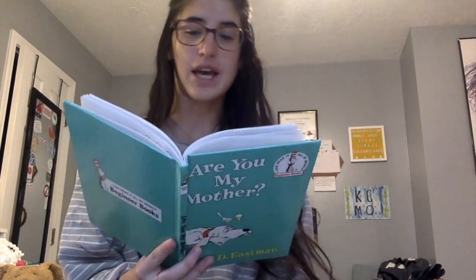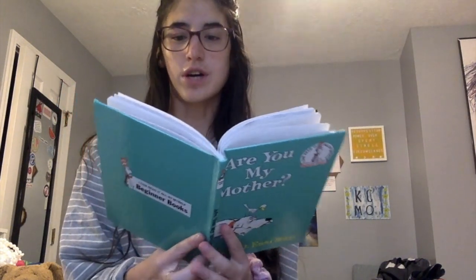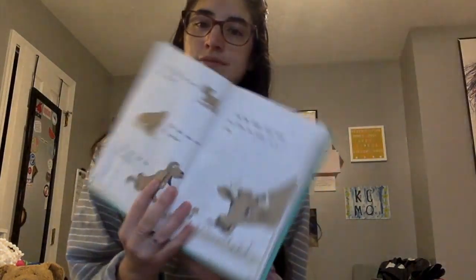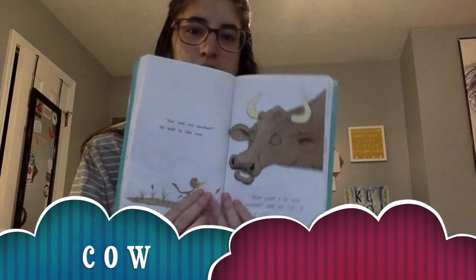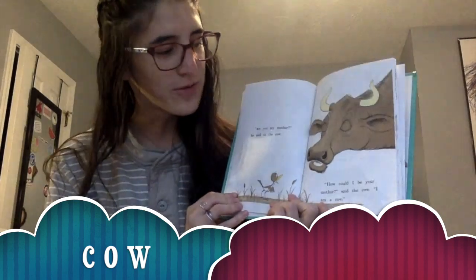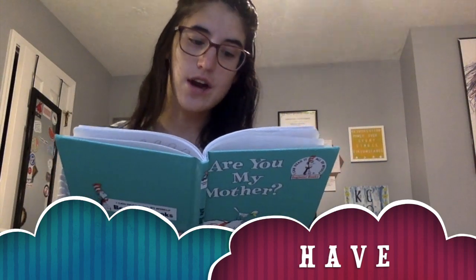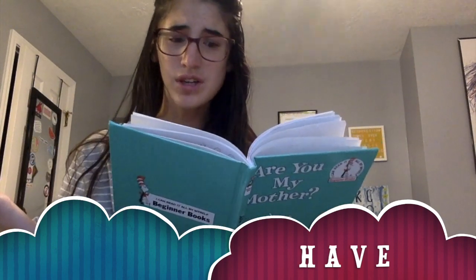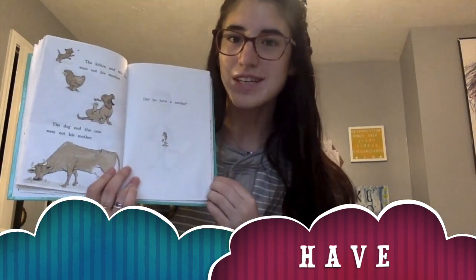The kitten was not his mother. The hen was not his mother. The dog was not his mother. So the baby bird went on. Now he came to a cow. Are you my mother? He said to the cow. Who could I be your mother? Said the cow. I am a cow. This sight word is cow — C-O-W. The kitten and the hen were not his mother. The dog and the cow were not his mother. Did he have a mother? This sight word is have — H-A-V-E.